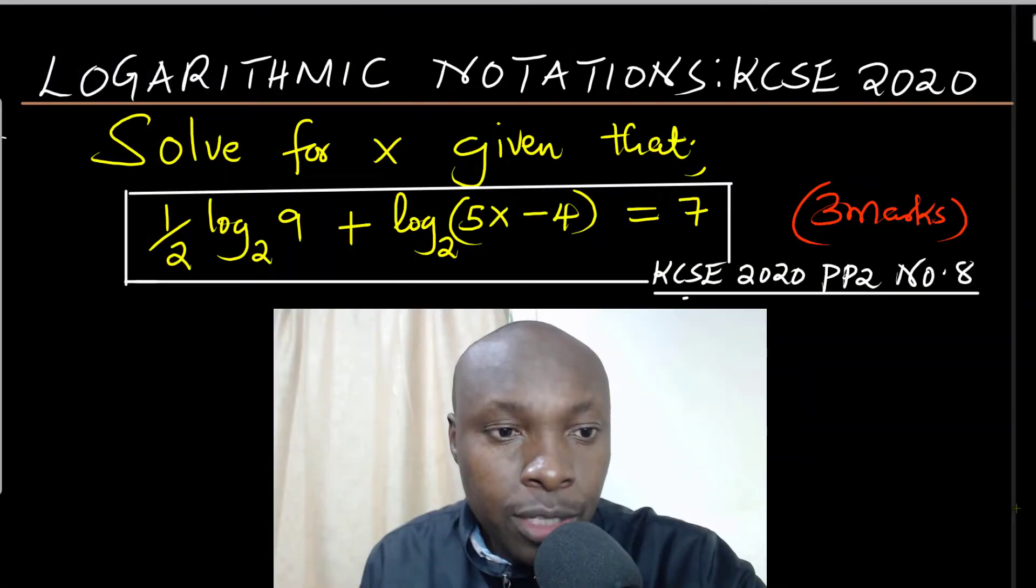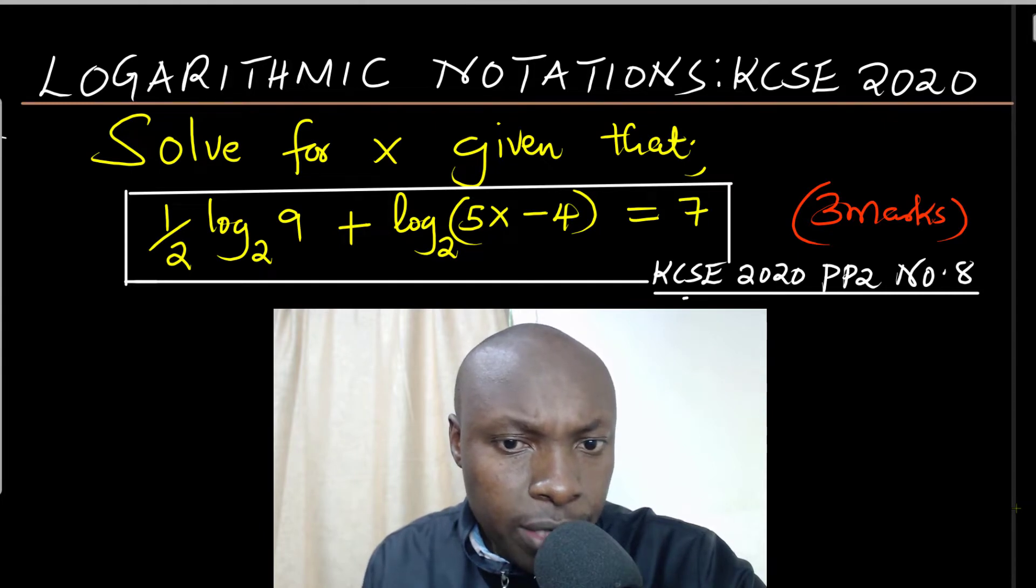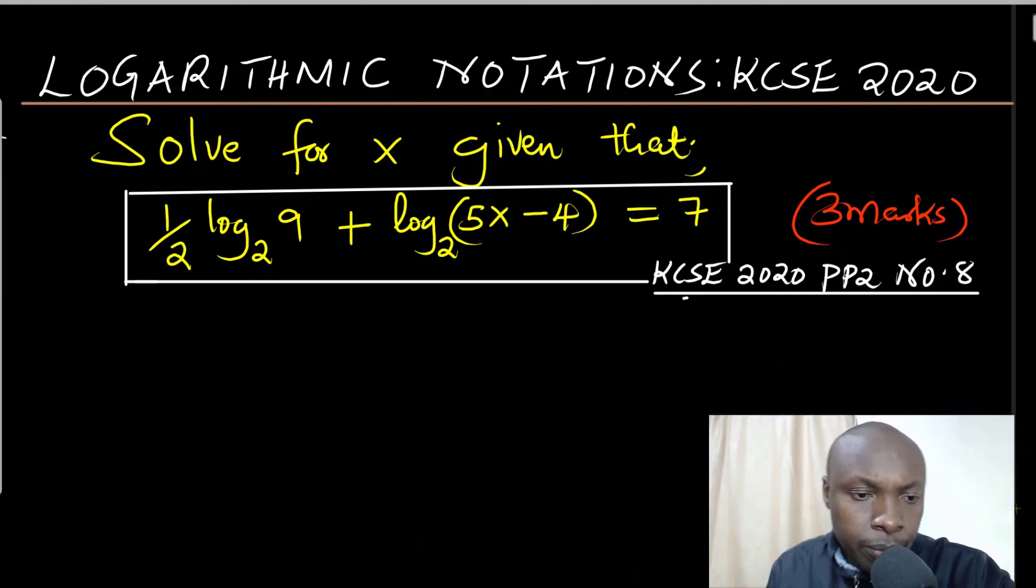Hello viewers, welcome to the lesson. In this lesson I want us to solve a question on logarithmic notations from KCSE 2020 Paper 2, question number 8. The question is: solve for x given that (1/2)log₂9 + log₂(5x-4) = 7. In order to solve this question...